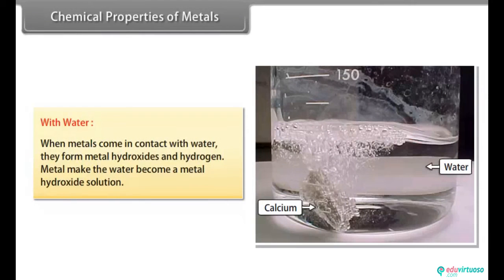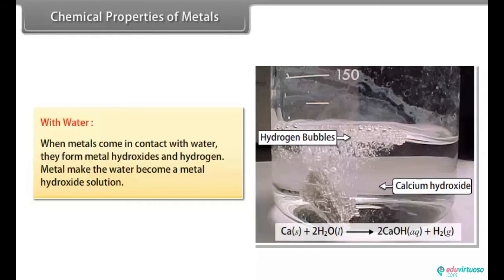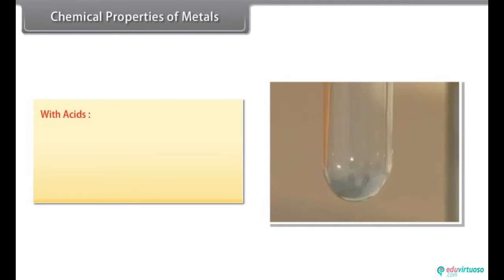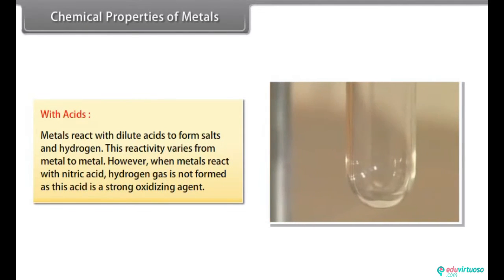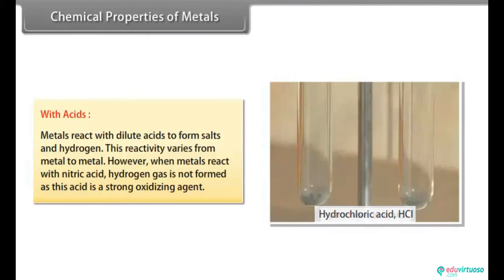With water. When metals come in contact with water, they form metal hydroxides and hydrogen. Metal make the water become a metal hydroxide solution. With acids. Metals react with dilute acids to form salts and hydrogen. This reactivity varies from metal to metal. However, when metals react with nitric acid, hydrogen gas is not formed as this acid is a strong oxidizing agent.